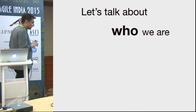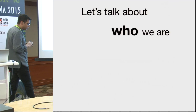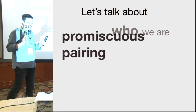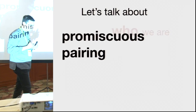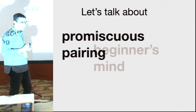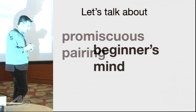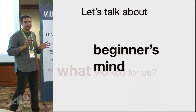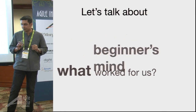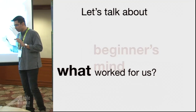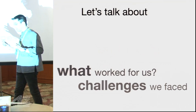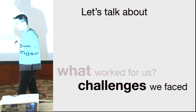Before I do that let me quickly brief you about myself. I am Ankur, I am working with JP Morgan as an agile developer and I have spent about 12 years in the industry on various product developments in the financial as well as the telecom domain.